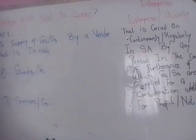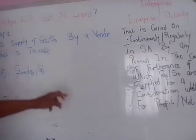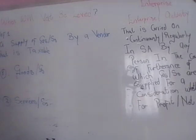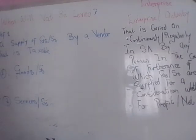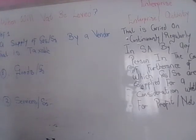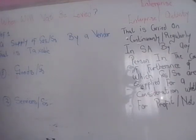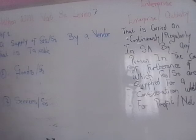You will need to have taxable supplies — goods or services that fall under the category of being taxable. From your undergraduate knowledge, taxable supplies are things that are not exempt, not denied supplies, and not zero-rated supplies. By default, things not mentioned in those categories will in most cases be taxable supplies. We will get into more detail as we go through the lesson about such supplies being part of the VAT Act.